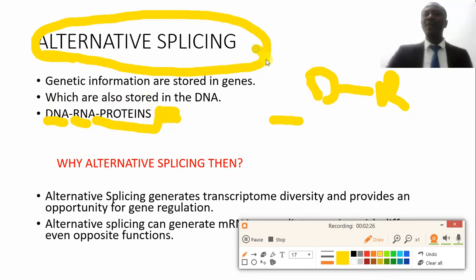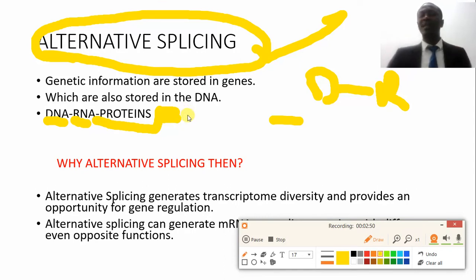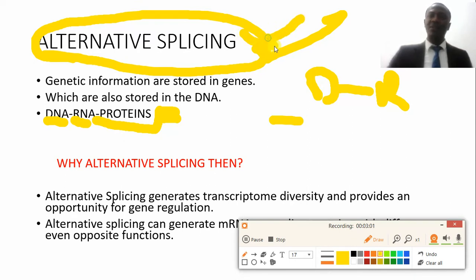The idea of alternative splicing comes from scientists in the 1970s when they understood the splicing process — that different introns would be removed from exons and the exons would combine. They later realized that different exons can also join in different combinations, and at the end of the day we see different proteins being formed from the same gene.